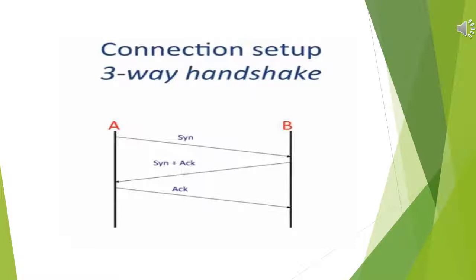We will start with connection setup. Connection setup is when two computers connect with each other and share resources — a client and server can connect and share information. For connection setup, two fields are required: SYN and acknowledgement. SYN is the first sequence number that the sender is going to send, and the acknowledgement number is the next sequence number that the receiver is expecting from the sender.